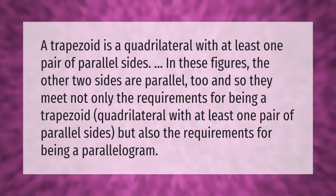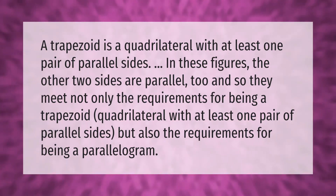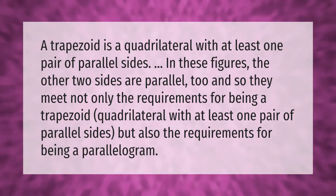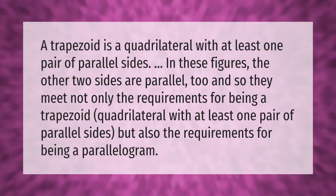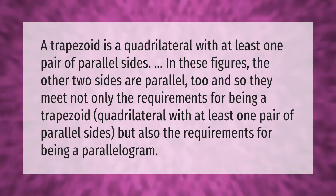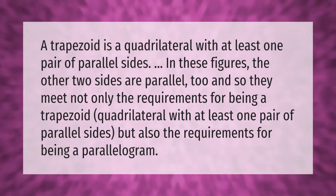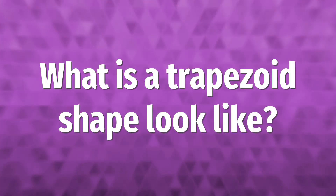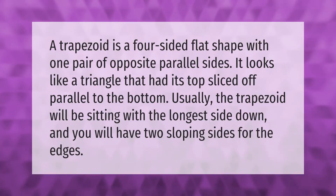A trapezoid is a quadrilateral with at least one pair of parallel sides. In these figures, the other two sides are parallel too, and so they meet not only the requirements for being a trapezoid — a quadrilateral with at least one pair of parallel sides — but also the requirements for being a parallelogram.